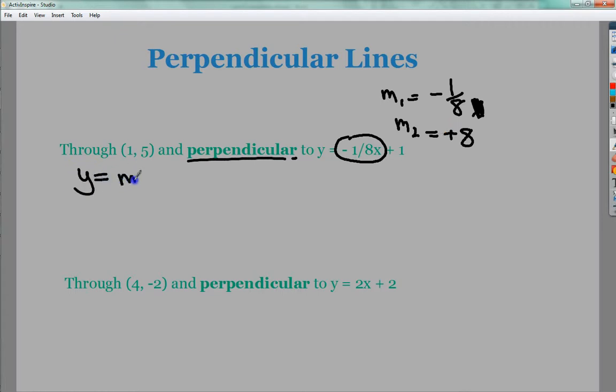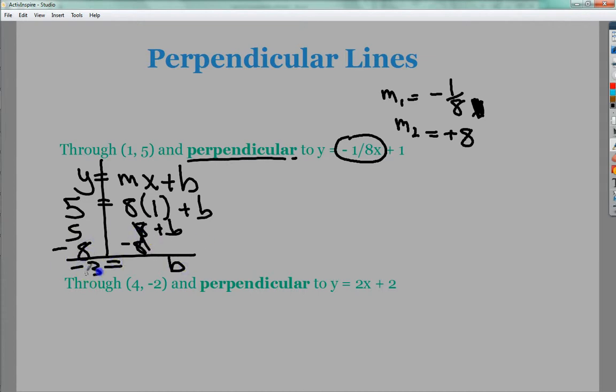Plug it in to the generic slope intercept form. My m value is 8. My x value is 1, which comes from right here. My y value is 5, which also comes from my coordinate. Subtract 8 from both sides. B is equal to -3. So my final answer is y = 8x - 3.